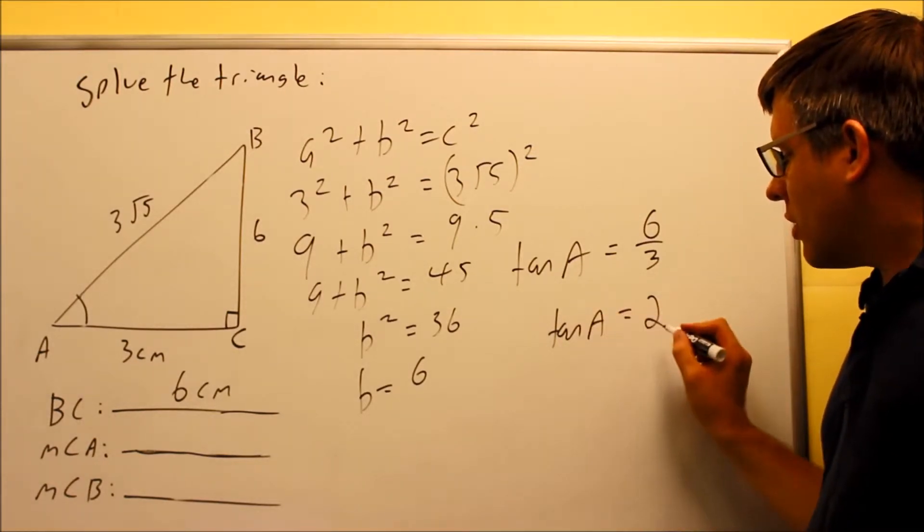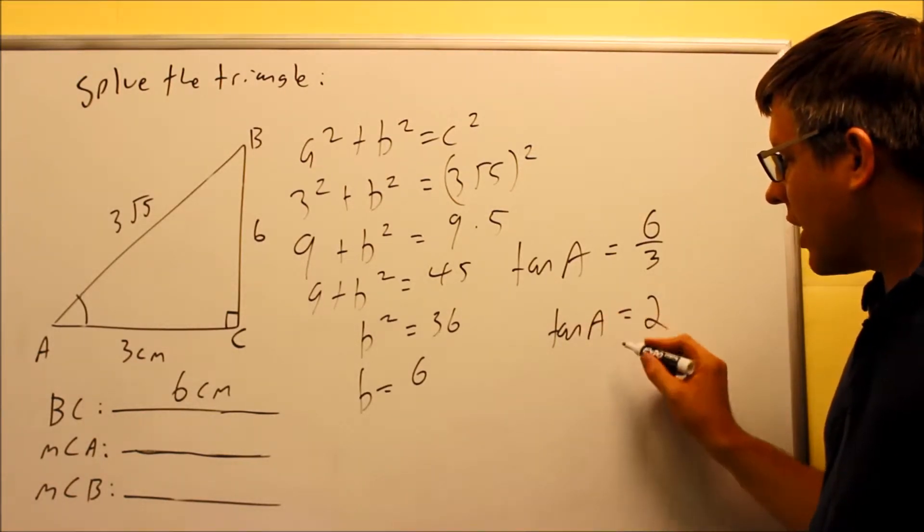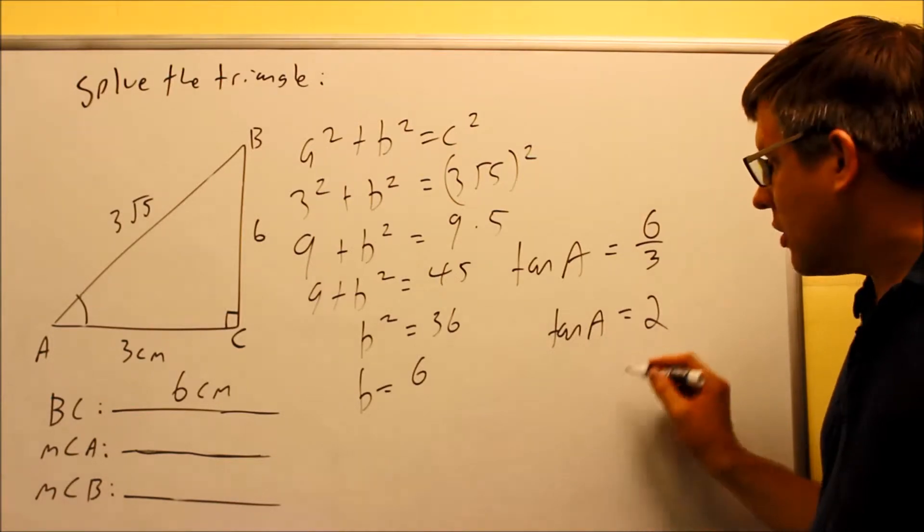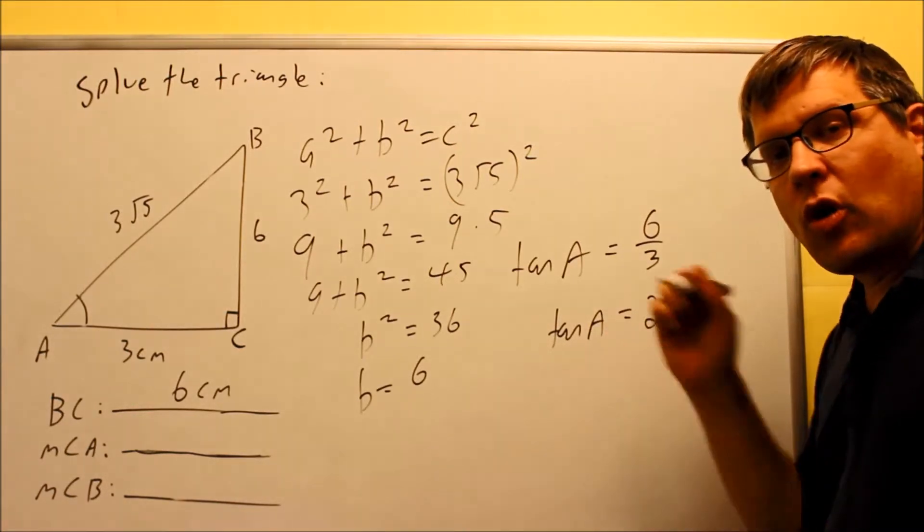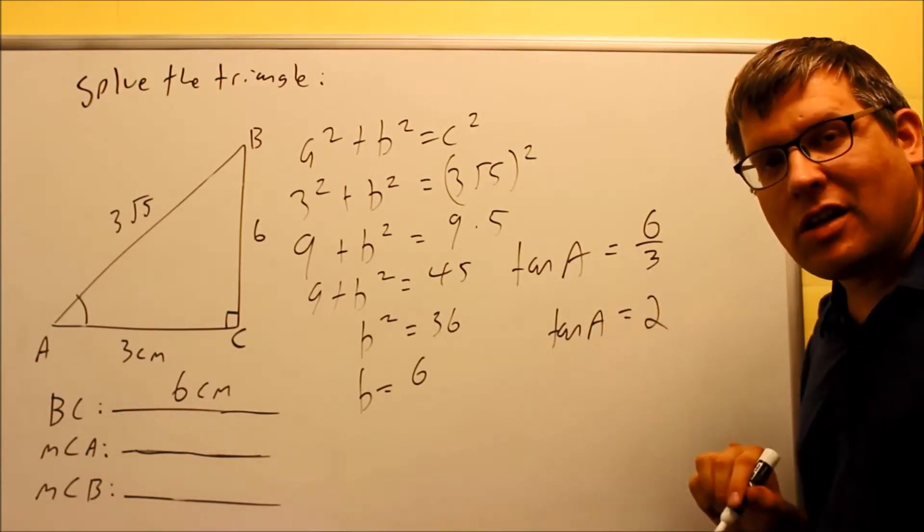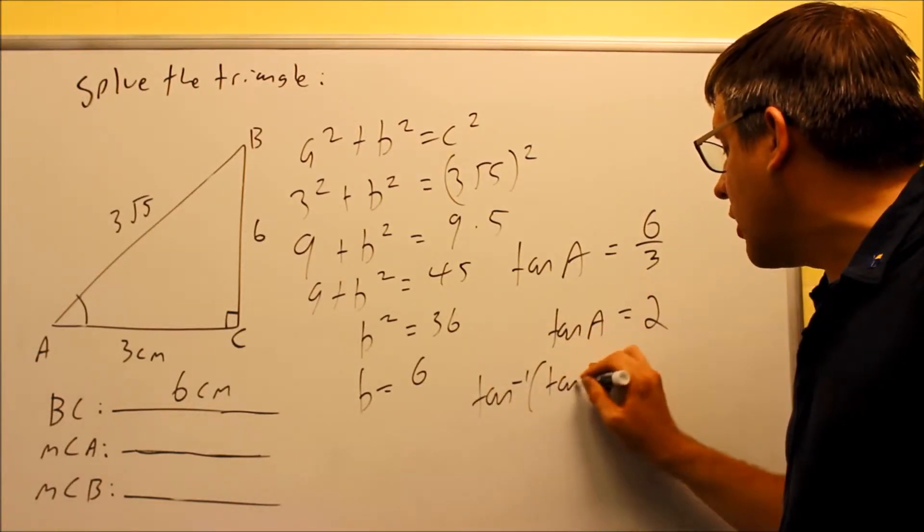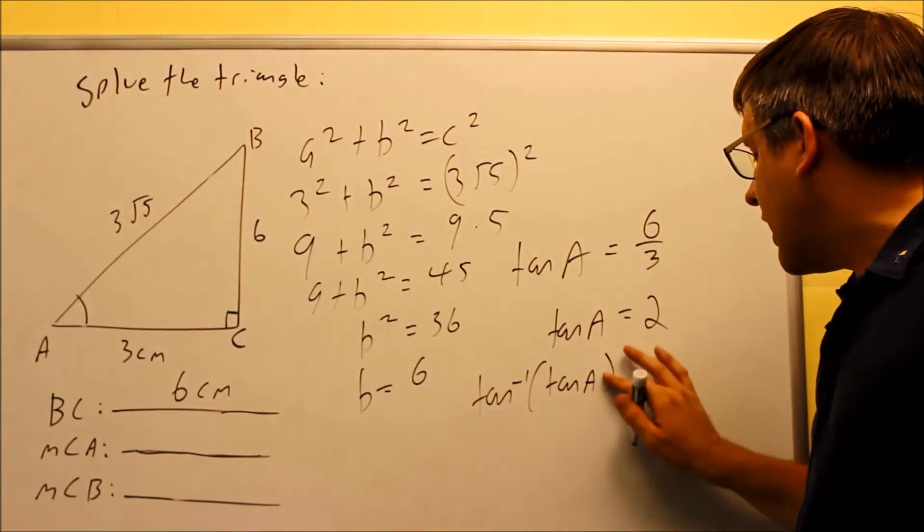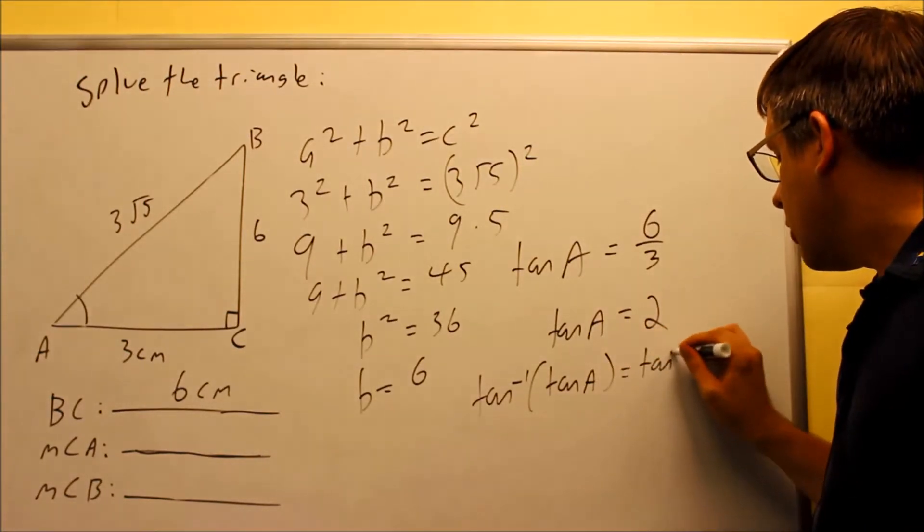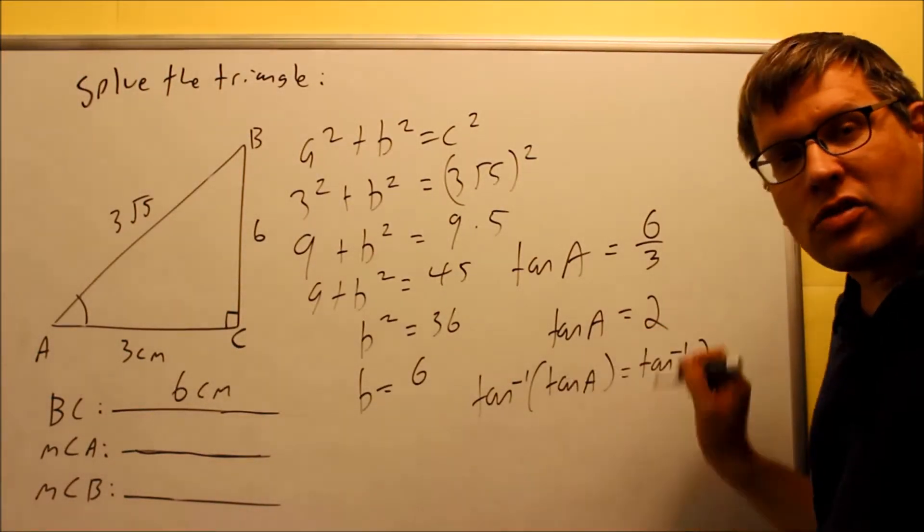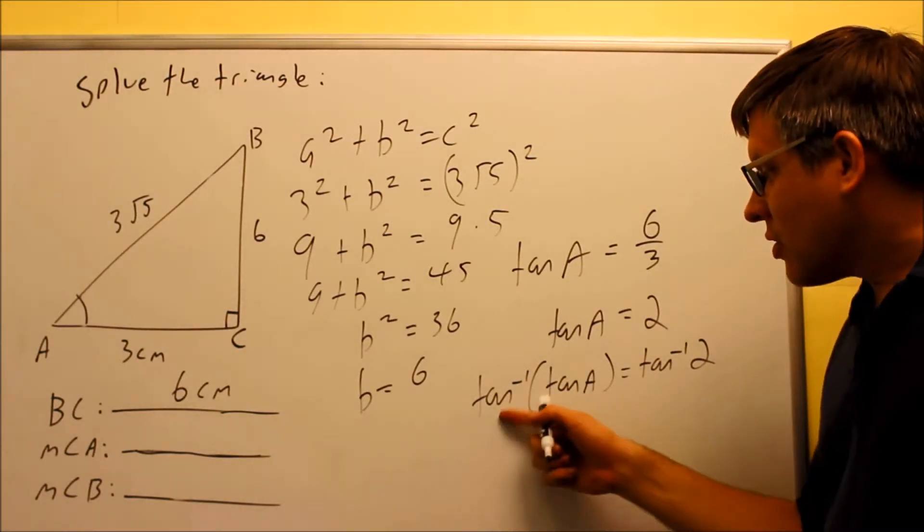Now this part right here, since I can't put an angle in to get an answer, I need to get A by itself. The only way to get A by itself is by taking the inverse. So I want to get rid of the tangent there, so I'm going to put an inverse tangent out in front there, but what I do to one side, I have to also do to the other side. I'm taking inverse tangent of both sides.